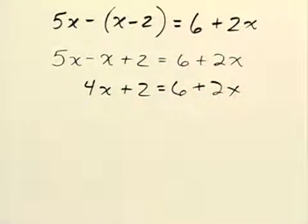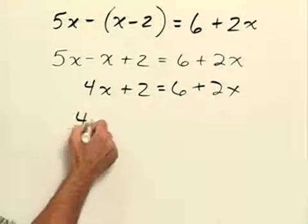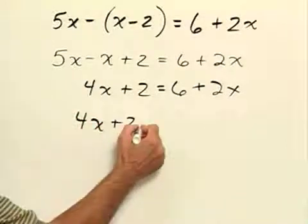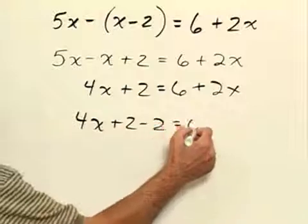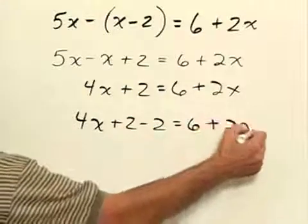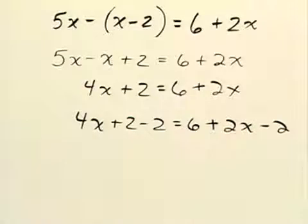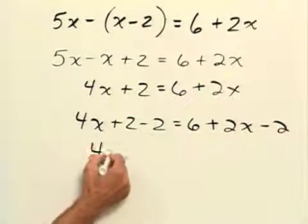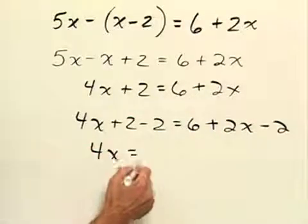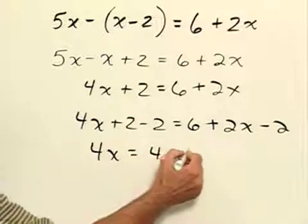Now we need to get the x's on the same side of the equation and the constants on the same side of the equation. So we need to subtract 2 from both sides. I'll have 4x plus 2 minus 2 equals 6 plus 2x minus 2. That'll leave us with 4x is equal to 4 plus 2x.